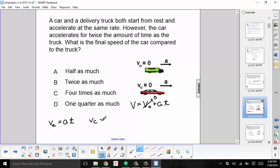For the car, we have A times 2T, twice the amount of time. So that is equal to 2AT.